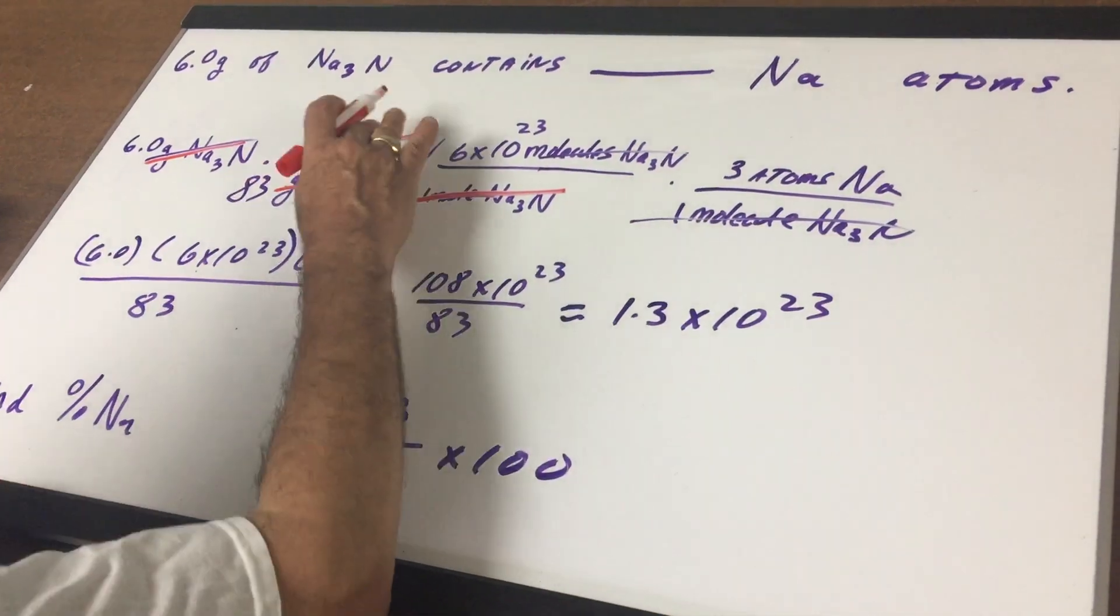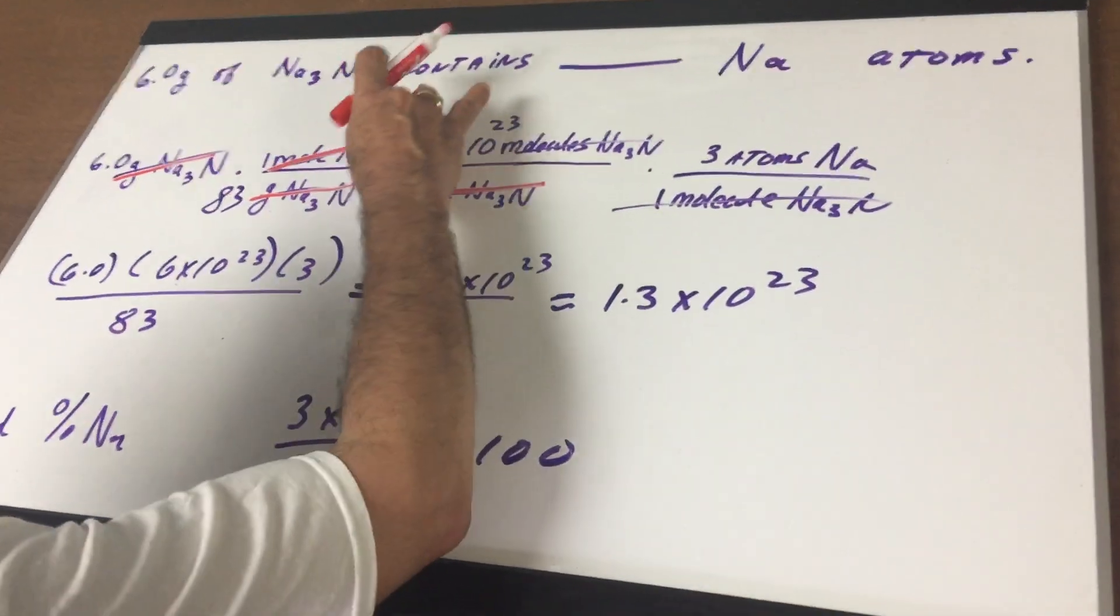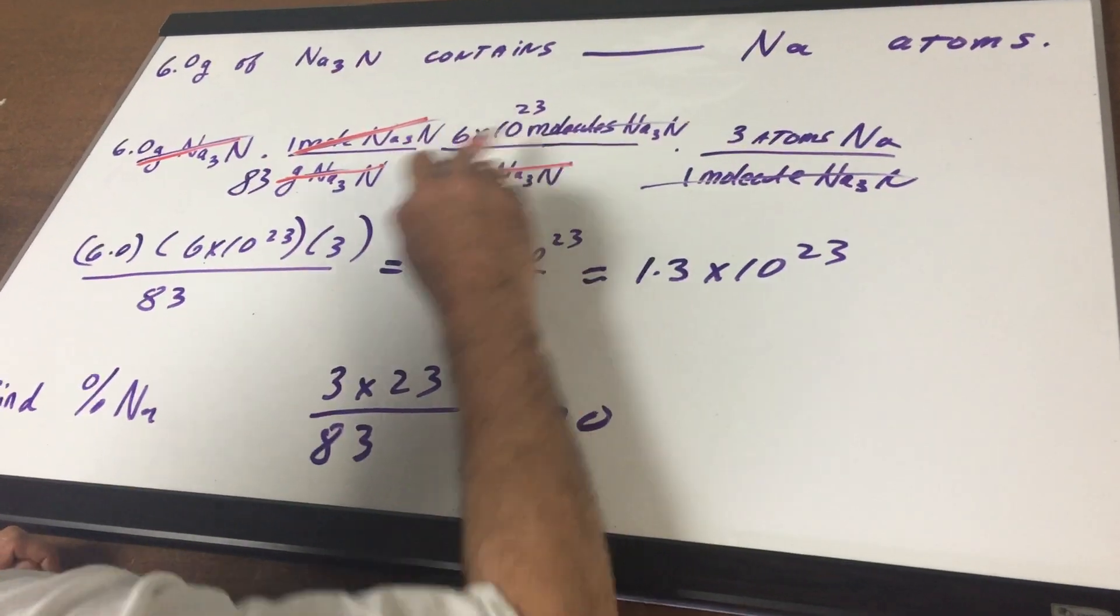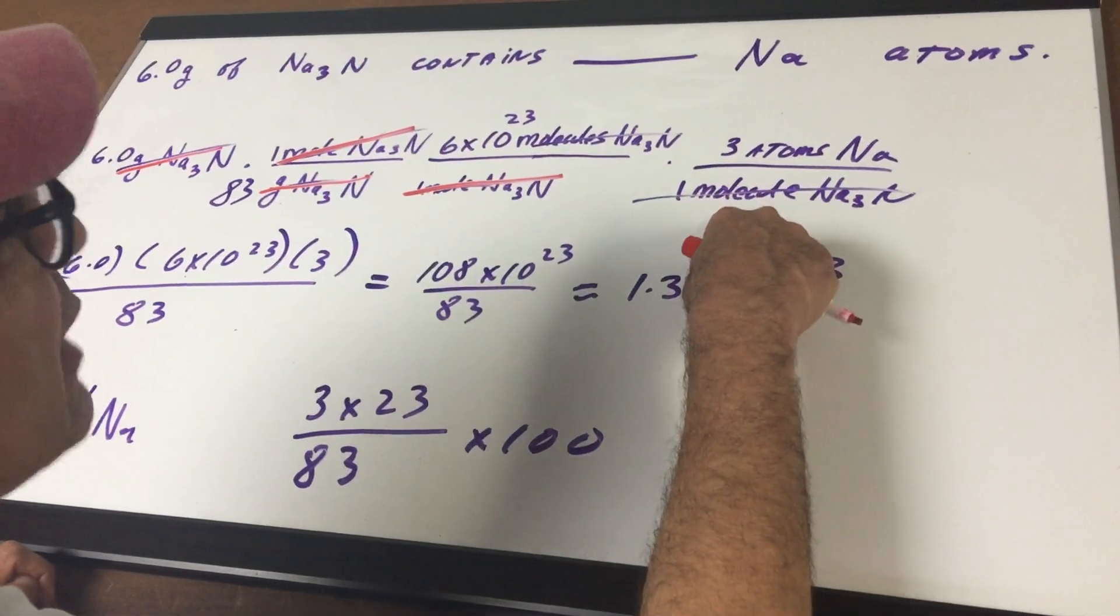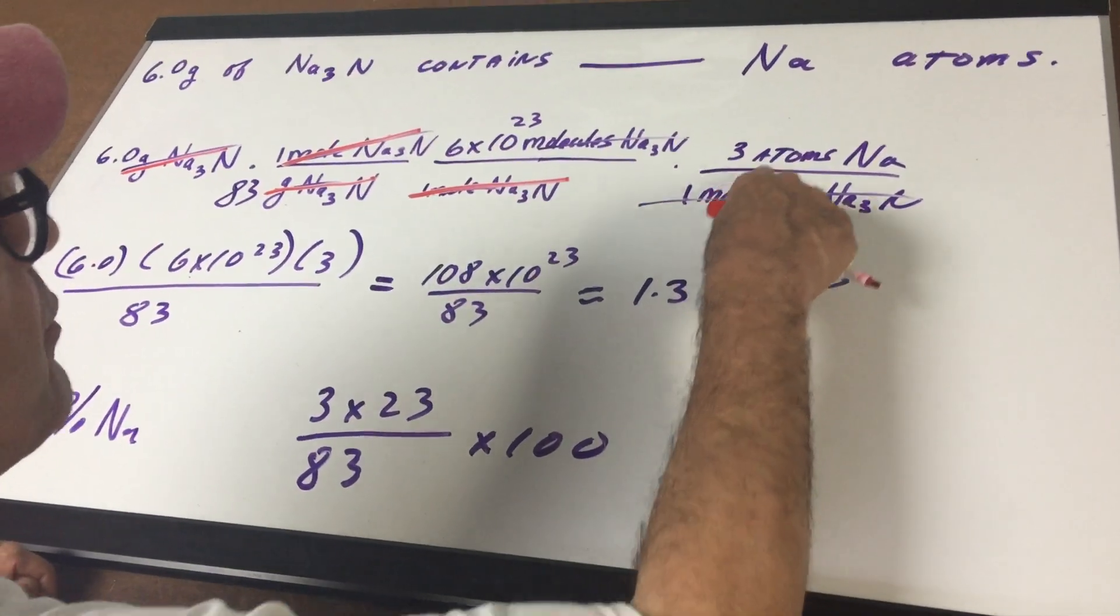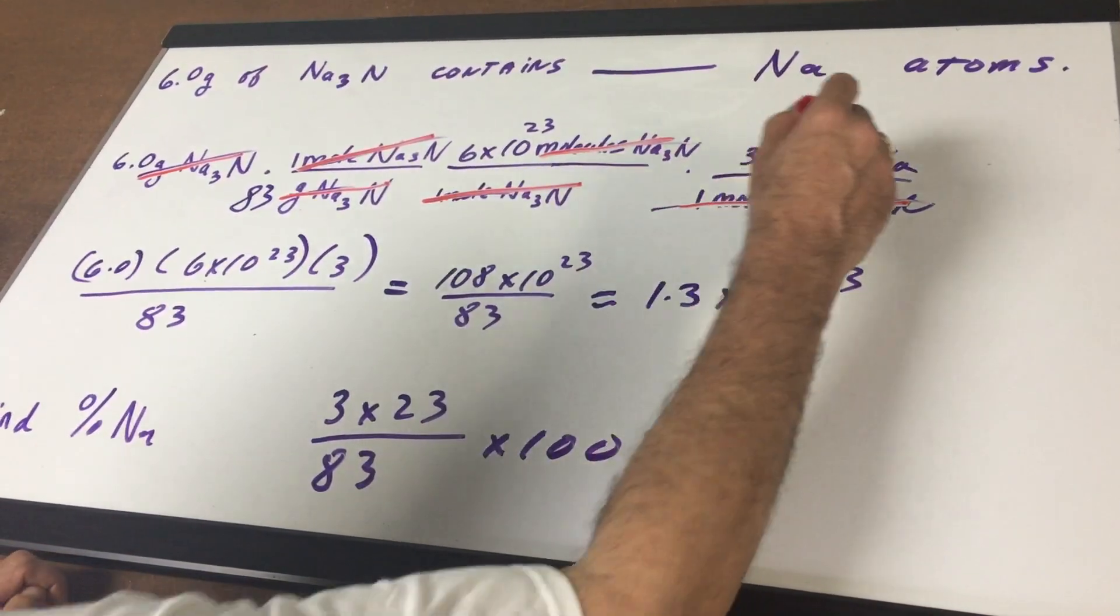in stoichiometric calculations, just think of this as one big molecule. So we have 6.02 times 10 to the 23rd molecules and then in one molecule of this, there are three atoms of sodium and molecules cancel. So we're left with atoms of sodium.